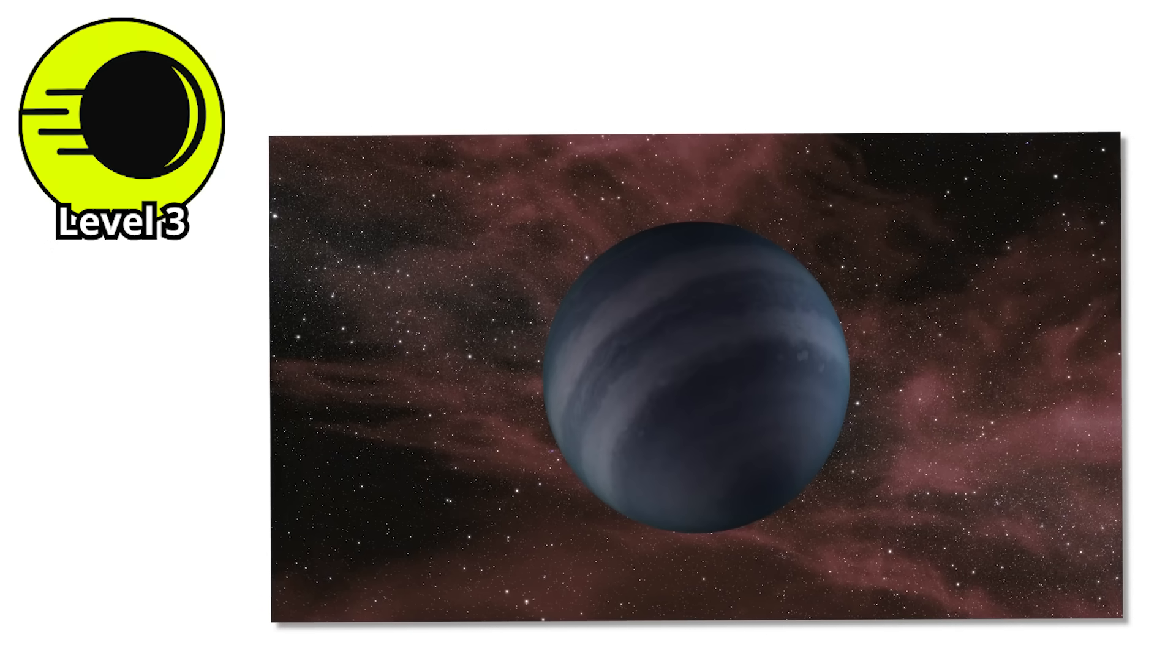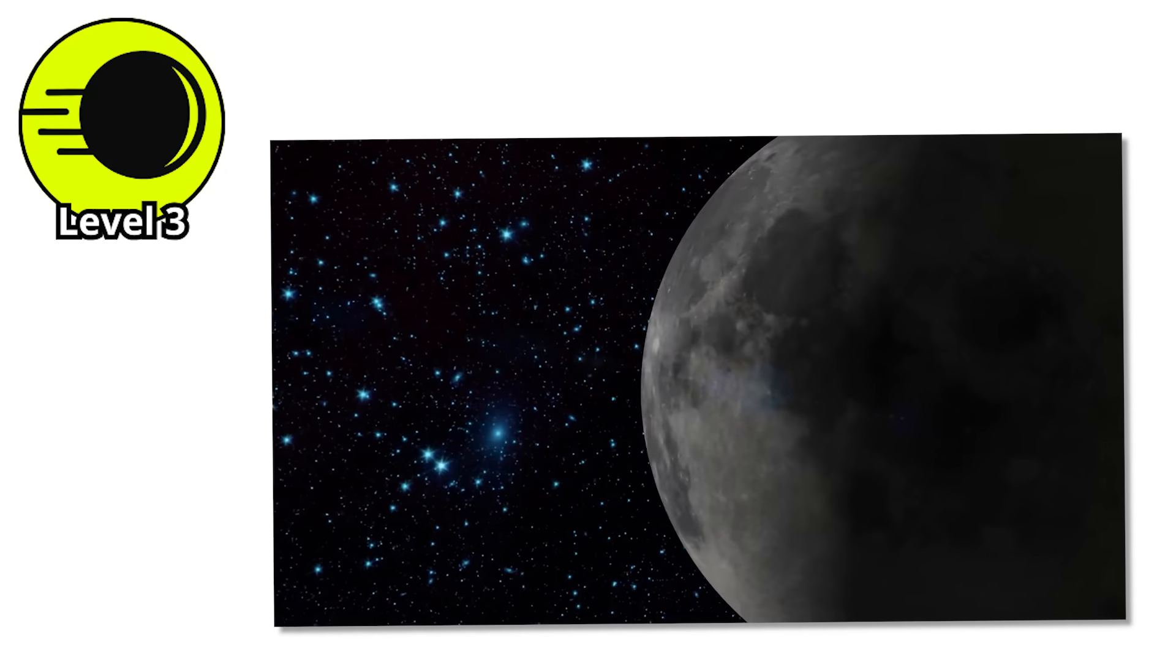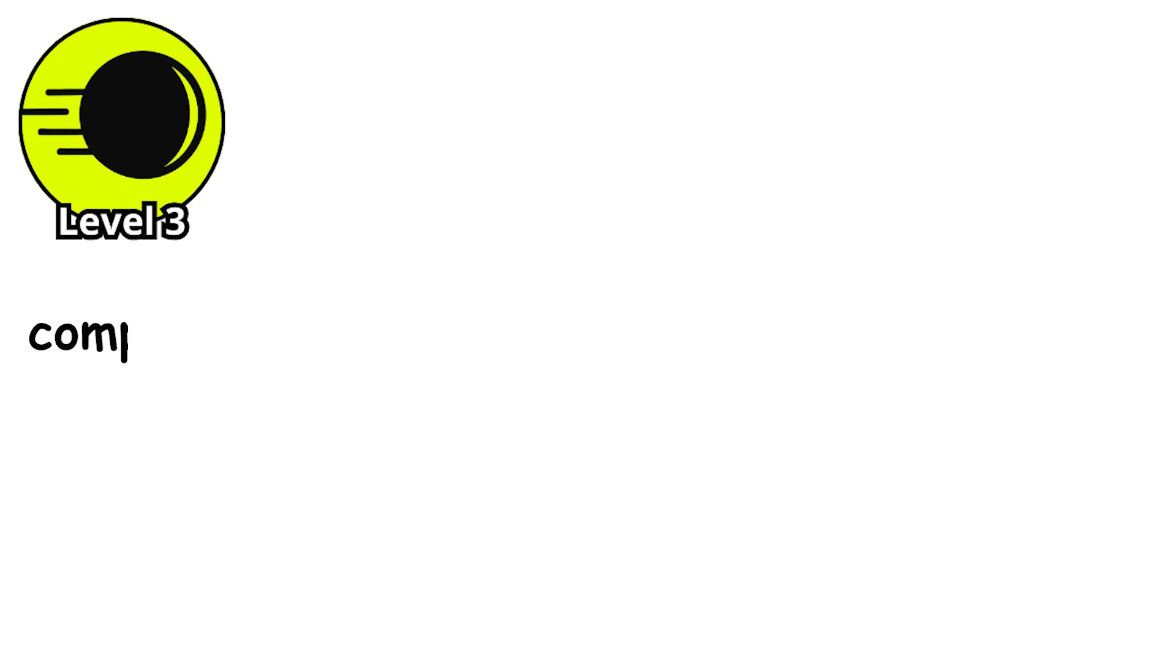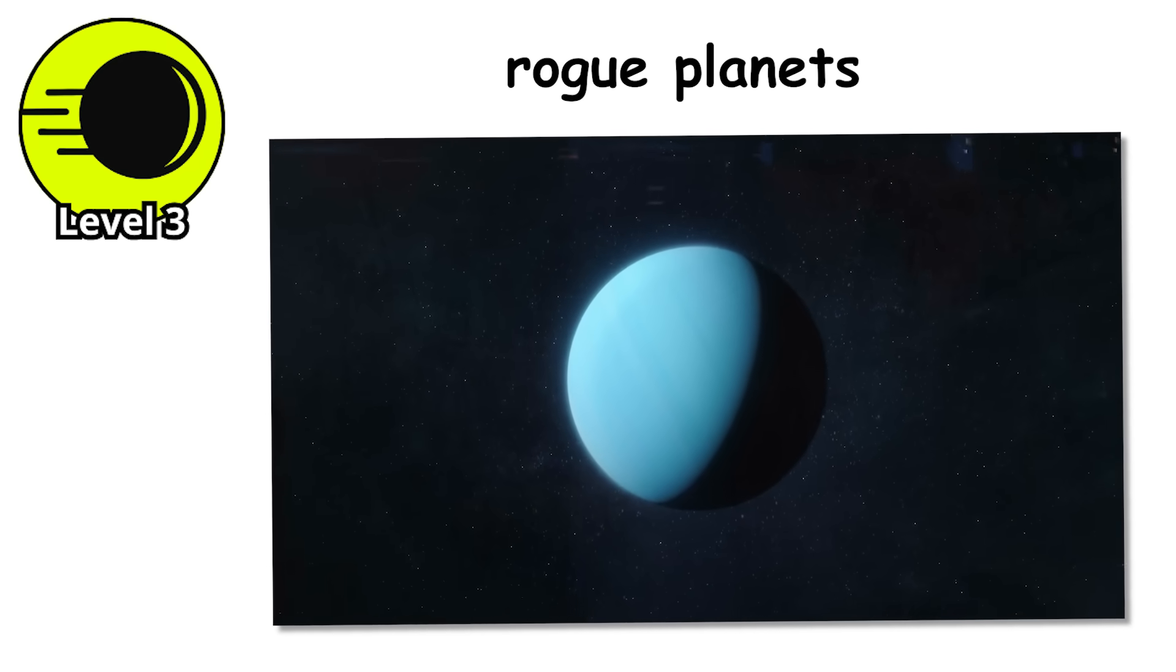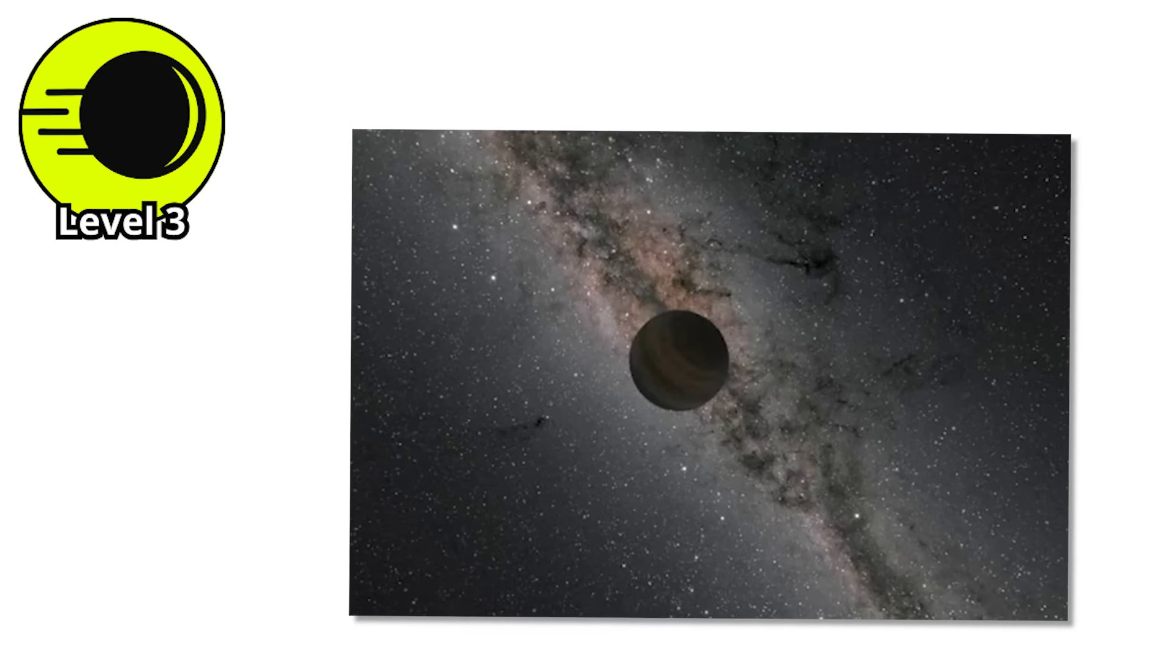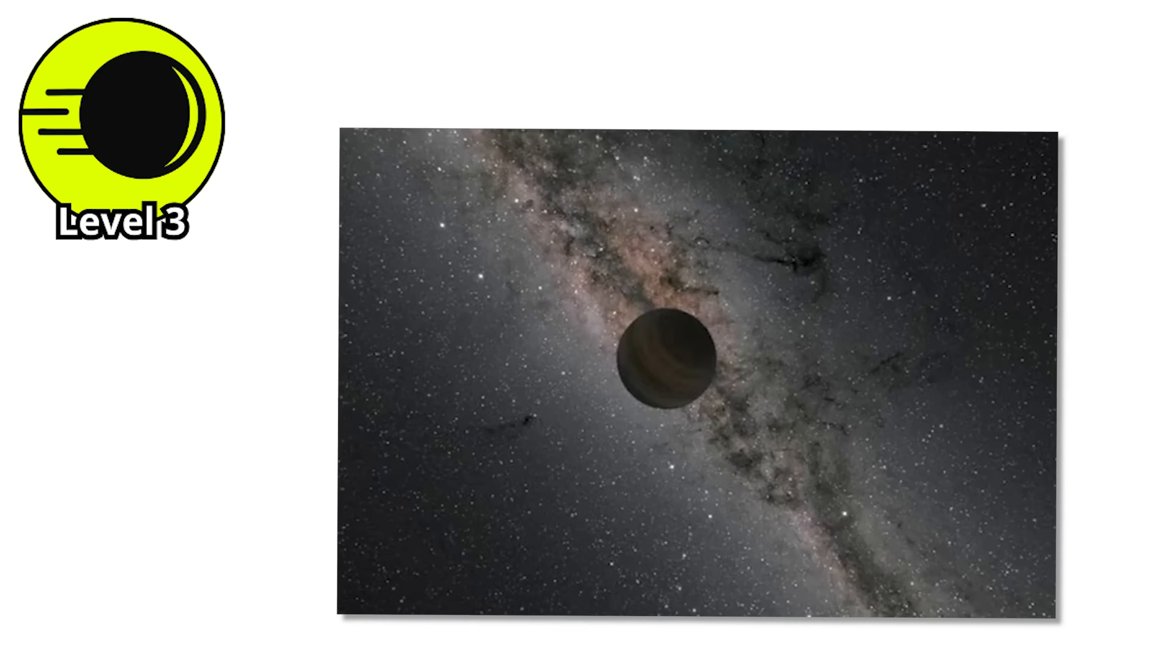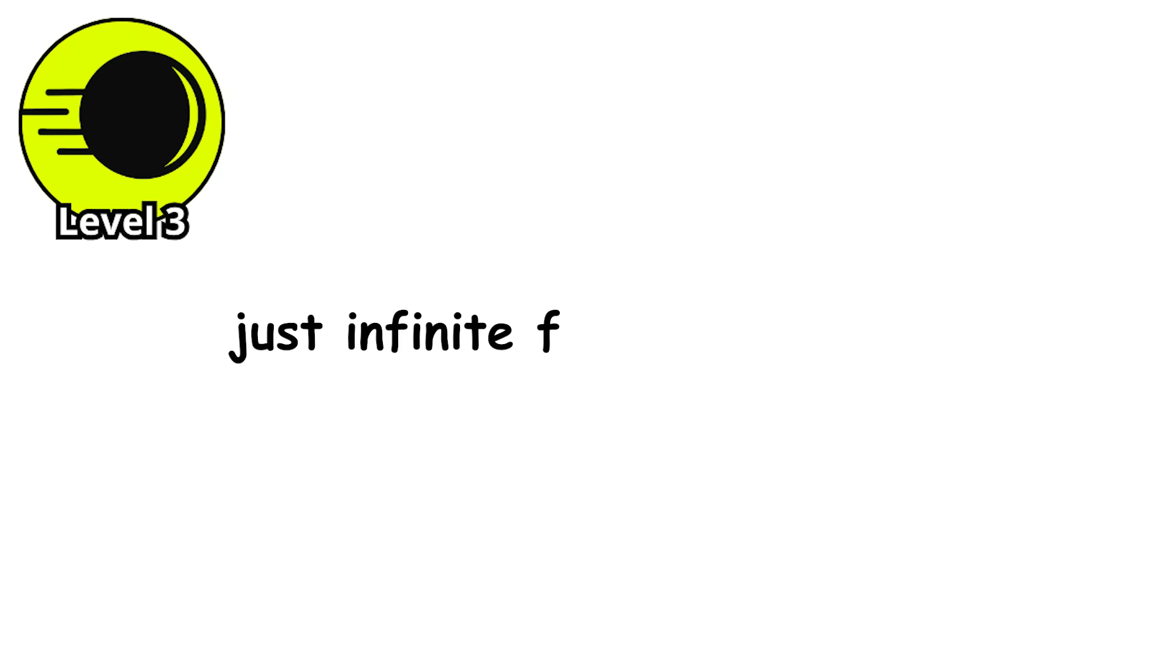Level 3. Picture a planet, now remove its star. Remove the sun, the daylight, the seasons, everything. Just a world tumbling through the void completely alone in eternal darkness and cold. These are rogue planets, and they're exactly what they sound like. Planets that have been violently ejected from their solar systems, now drifting through interstellar space with no sun to orbit. No day or night cycle. Just infinite frozen darkness.